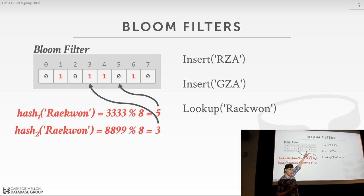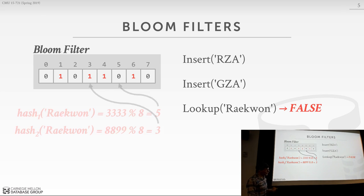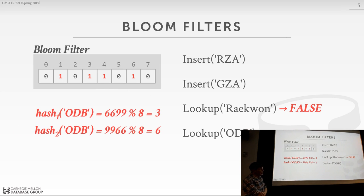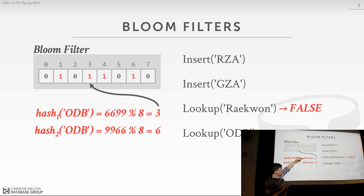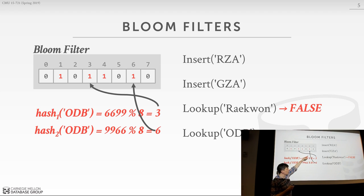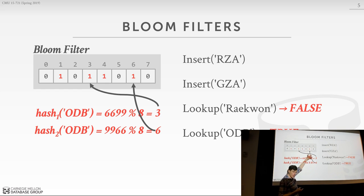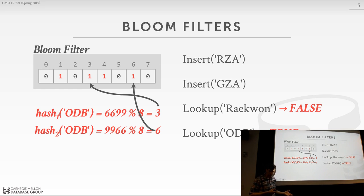A bloom filter will never give you false negatives — it will never tell you something doesn't exist when it really does. But let's try a lookup on ODB: the first bit lands at 3, which is set, and the second bit lands at 6, which is set — so this comes back true. But we know ODB is actually not in our set because we didn't insert it. This is an example of a false positive.